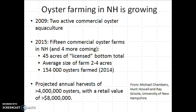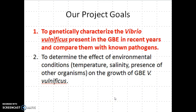It's a worthwhile endeavor to study and characterize the populations of Vibrio vulnificus in the Great Bay estuary of New Hampshire. Our specific project is focused on two objectives: first, to genetically characterize the Vibrio vulnificus in the Great Bay estuary from recent years and compare them with known pathogens; and secondly, to determine the effect of environmental conditions like temperature, salinity, or the presence of other organisms such as Vibrio parahemolyticus on the growth of V. vulnificus found in the Great Bay estuary.